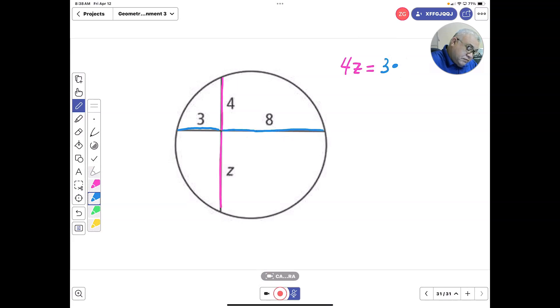Which is a measurement of 8. So what you have is 4z equals 3 times 8 which is 24, divided by 4. So z equals 6. This measurement here will be equal to 6.